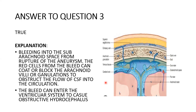The answer is true — subarachnoid hemorrhage can cause hydrocephalus. To understand the pathophysiology of hydrocephalus secondary to subarachnoid hemorrhage, you need to know the ventricular system of the brain and how CSF moves from the lateral ventricles to the arachnoid villi or arachnoid granulation. This is the arachnoid granulation — this part of the brain absorbs CSF and sends it into circulation.